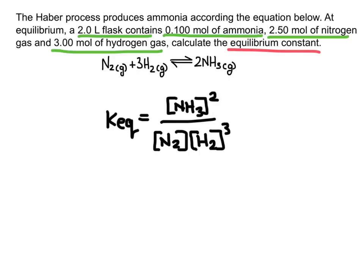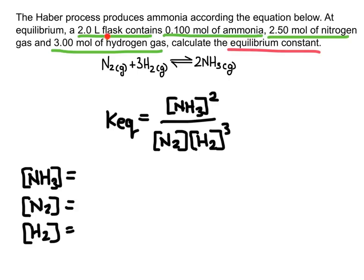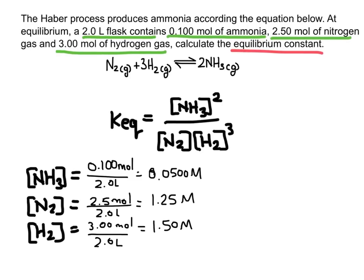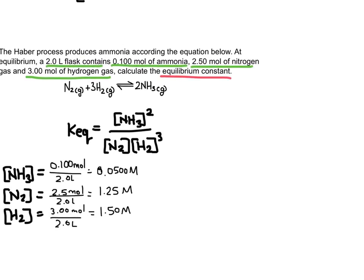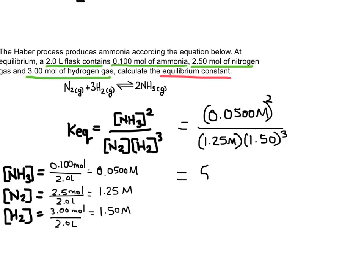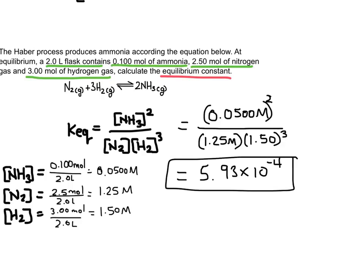Concentration is measured in moles per liter, and the flask is 2 liters — that's the volume for each calculation. Using square brackets to denote concentration, I take the moles of ammonia (0.1 mol) divided by 2 liters, giving 0.05 M. I do the same for nitrogen and hydrogen to get their concentrations. Plugging everything into the equilibrium expression gives an equilibrium constant of 5.93 × 10⁻⁴. This is much less than 1, which means this reaction is reactant favored and would not produce ammonia easily.